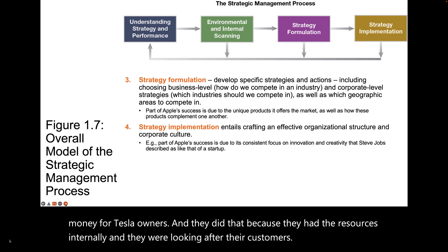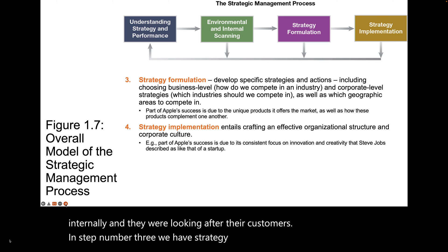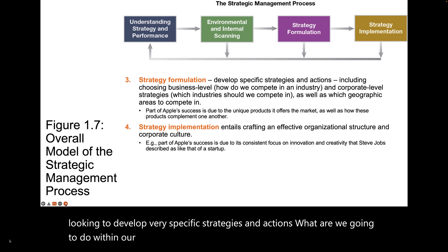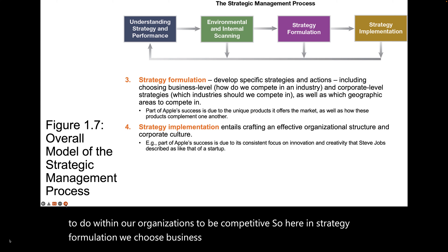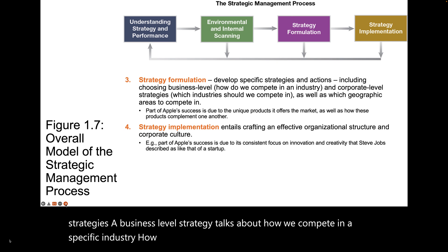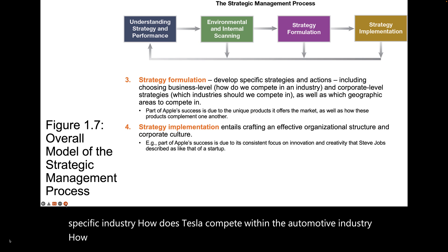In step number three, we have strategy formulation. This is where we look to develop very specific strategies and actions — what are we going to do within our organizations to be competitive? In strategy formulation, we choose business level strategies as well as corporate level strategies. A business level strategy talks about how we compete in a specific industry — how does Tesla compete within the automotive industry, how does Apple compete in the cellular phone industry?